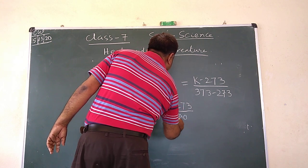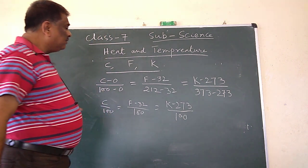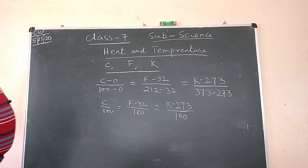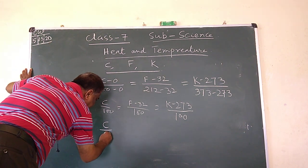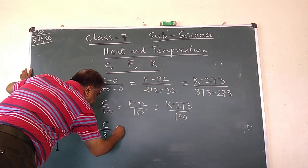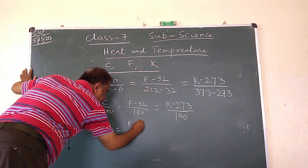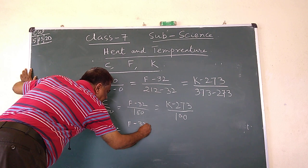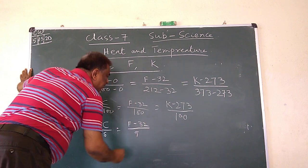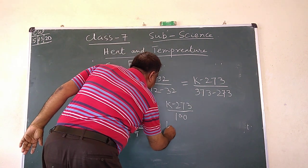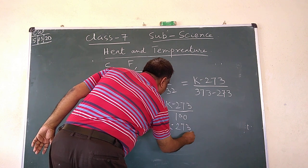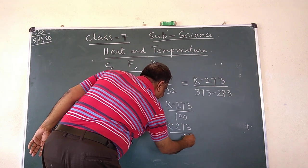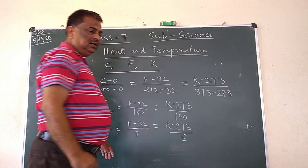This is our required formula. When simplified, you get: C by 5 equals F minus 32 by 9, equals K minus 273 by 5.